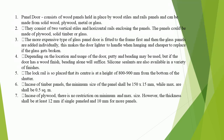Depending on the location and usage of the door, putty and beading may be used, but if the door has a wood finish, beading alone will suffice. Silicone sealants are also available in a variety of finishes. The lock rail is so placed that its center is at a height of 800 to 900 mm from the bottom of the shutter.